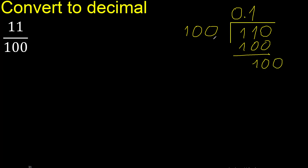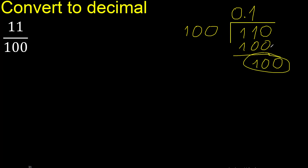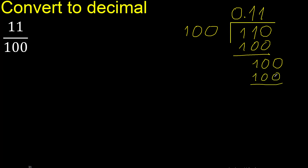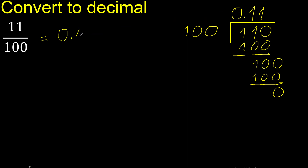Point is here: 100. Multiplied by which number is nearest to 100 but not greater — multiplied by 1 is 100. Subtract: 0. Therefore finish.